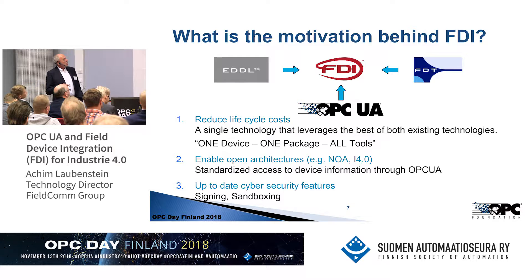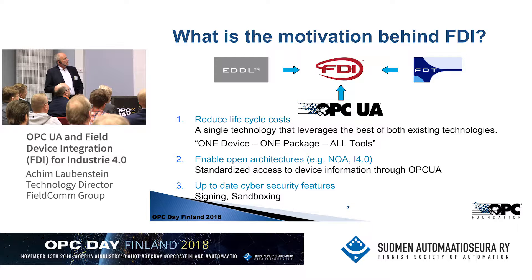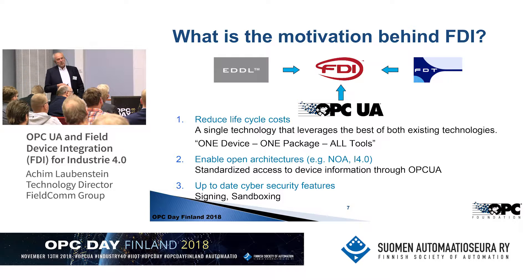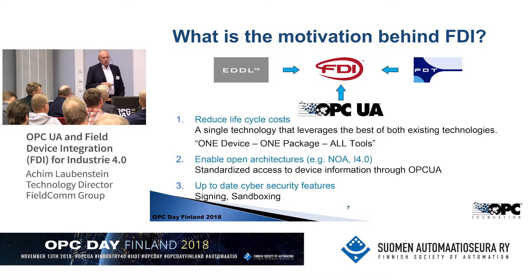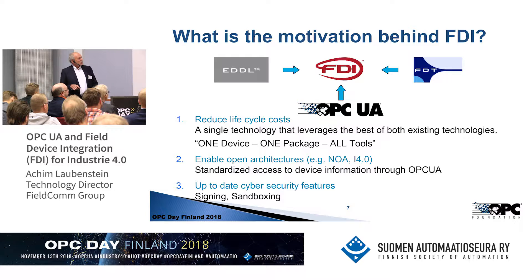With FDI we cover two major things. First, to reduce lifecycle costs for device vendors and end users for process automation devices — the goal here is to have one device package for all tools. Second, with OPC UA, FDI enables open architectures. Here I mention NAMUR open architecture. NAMUR is a big organization, mainly in Germany, of chemical, pharmaceutical, and oil and gas companies, and they standardize requirements for process automation. Industry 4.0 is also a kind of open architecture where FDI fits.